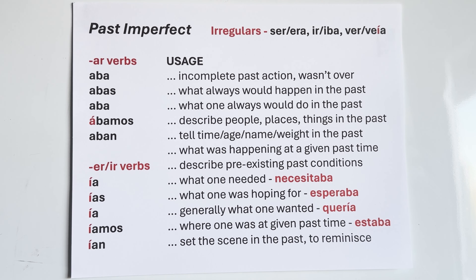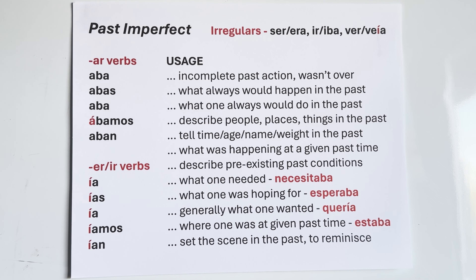Ver — to watch TV — ver la tele: veía, veías, veía, veíamos, veían. The verb ver takes the endings of ER and IR verbs, but the difference is you don't take the ER off and leave just the V. You leave the VE intact, then add ía, ías, ía, íamos, ían. Like: antes veíamos mucha televisión — we used to watch a lot of TV. Those are your three irregulars: ser, ir, and ver.